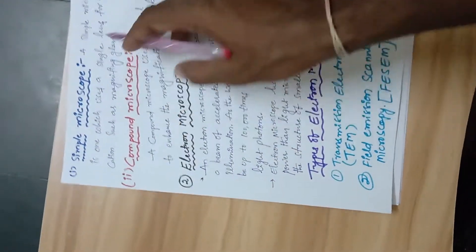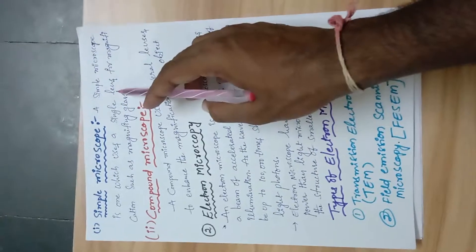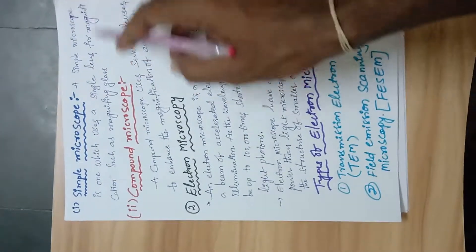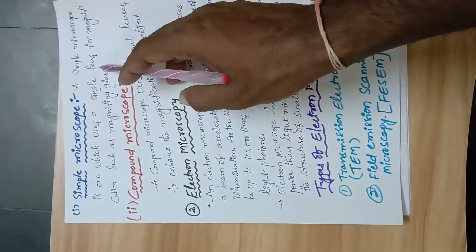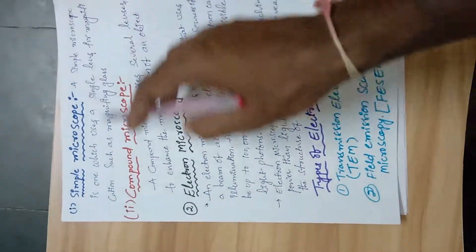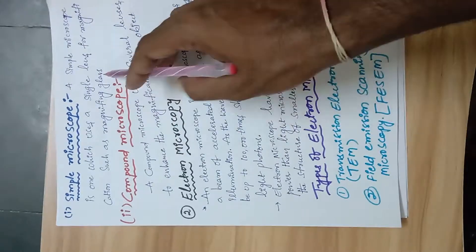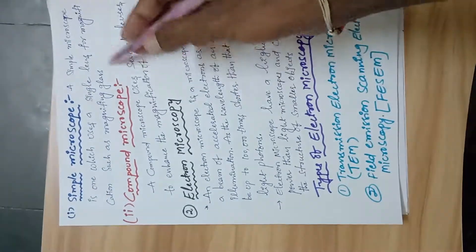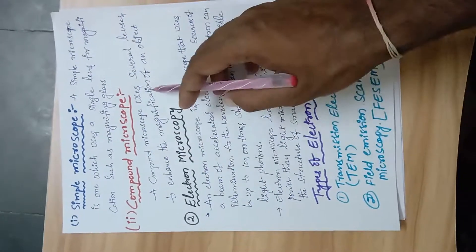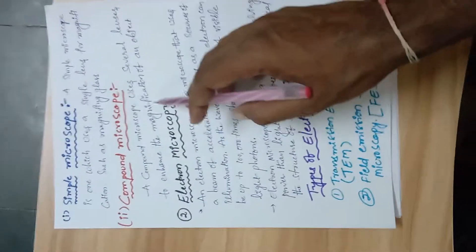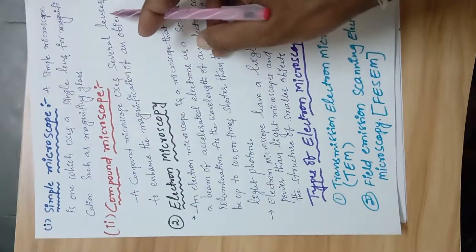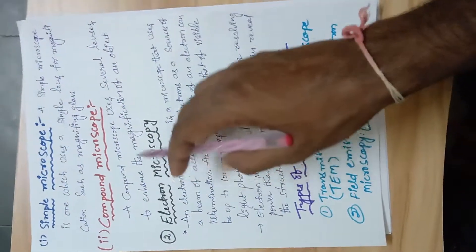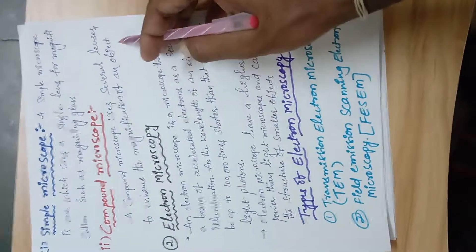A simple microscopy uses a single lens for magnification — the best example is a magnifying glass. A compound microscopy uses several lenses to enhance the magnification of an object.